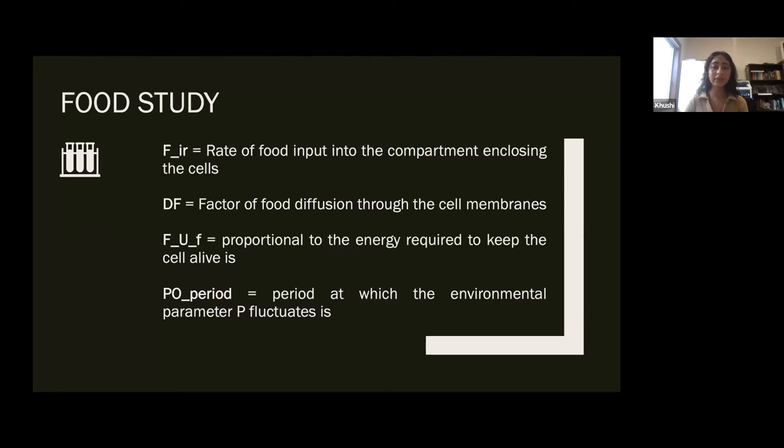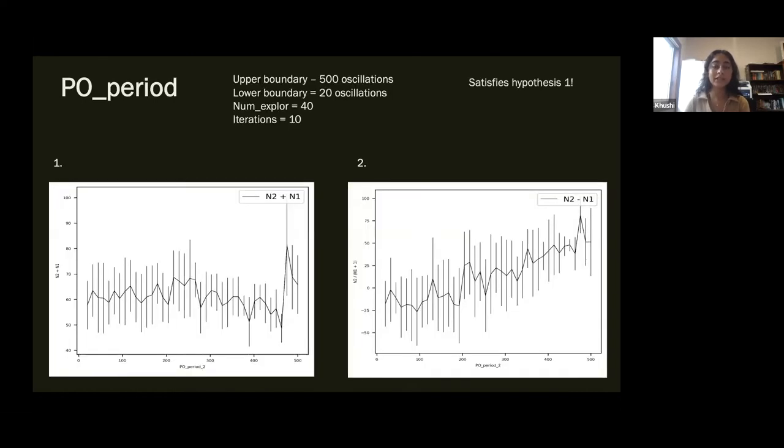Thus, to conduct a thorough investigation, my team developed a systematic constraint by delegating three specialized groups of parameter studies. While my fellow research associates looked at life or death factor studies and a volume growth study, I conducted a food study focused on the following factors. FIR is the rate of food input into the compartment enclosing the cells. DF is the factor of food diffusion through the cell membranes, and the energy required to keep the cell alive is proportional to FUF, while the rate at which our environmental parameter P fluctuates is PO period.